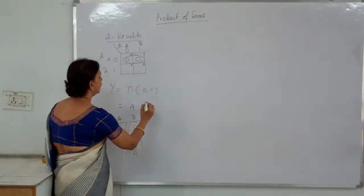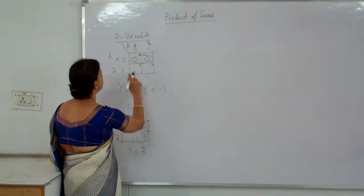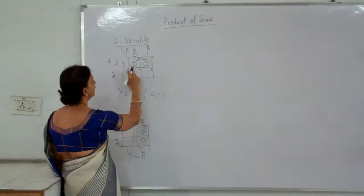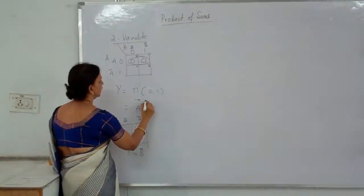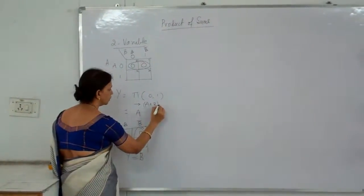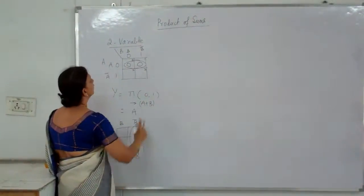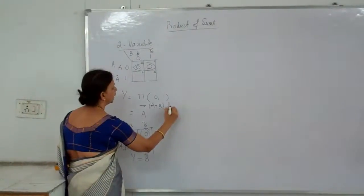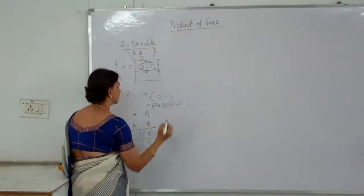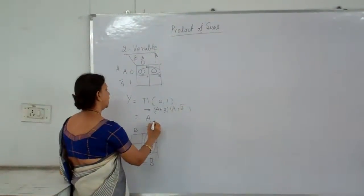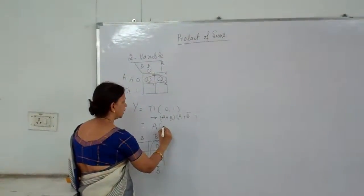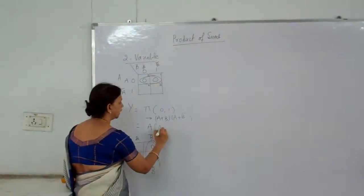If you verify: what is this product equal to? How do you write this? The 0 is (A + B). Now what is 1? (A + B-bar). So the product is (A + B) · (A + B-bar), which gives (B + B-bar) with A common, simplifying to A·1 + A·B-bar + B·A + B·B-bar.